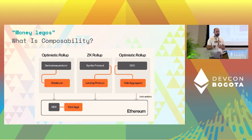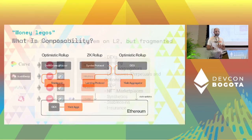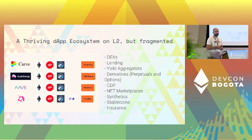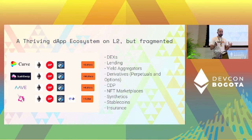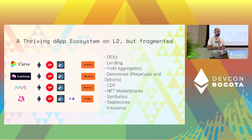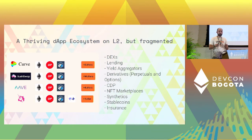That's the issue just described. As an example, these are four of the most popular protocols and we see that they are deployed on Ethereum and on the rollups — at least two of the rollups. But all these deployments are separate from each other; they cannot communicate with each other, there's no connection between them. The L2 ecosystem is quite huge and thriving with apps like DEXs, yield aggregators, NFT marketplaces, and synthetics — but it's fragmented.